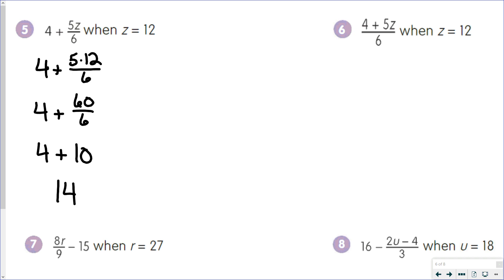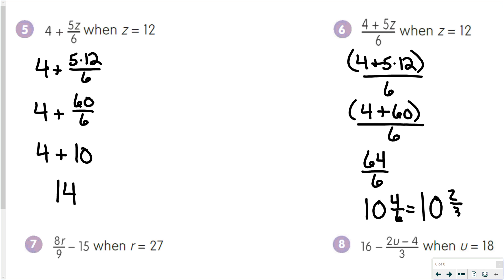Now number 6 looks very similar, but it is written slightly different. And remember, we want to think about what is up here as being inside parentheses. So 5 times 12 is 60. We have 4 plus 60, which is 64. And 64 over 6 is 10 and 4 sixths, which simplifies down to 10 and 2 thirds.